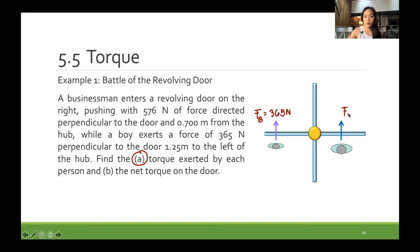And for the man, we have a force of 576 newtons. This has a distance of 0.7 meters, and this has a distance of 1.25 meters.